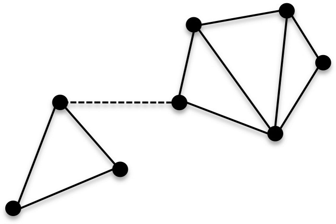The vertex and edge connectivities of a disconnected graph are both zero. One-connectedness is equivalent to connectedness for graphs of at least two vertices. The complete graph on n vertices has edge connectivity equal to n−1. Every other simple graph on n vertices has strictly smaller edge connectivity. In a tree, the local edge connectivity between every pair of vertices is 1.